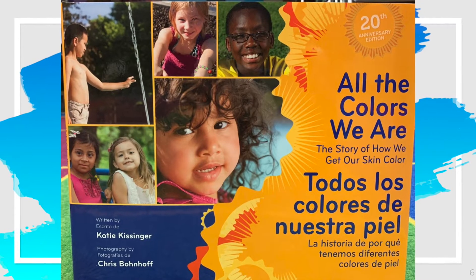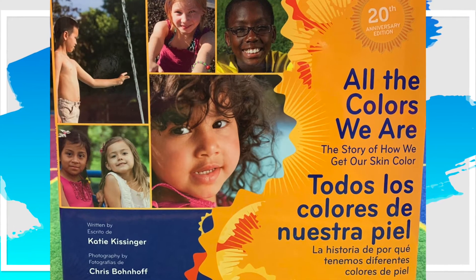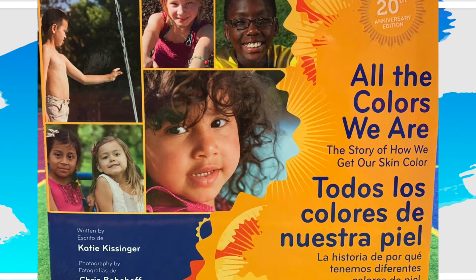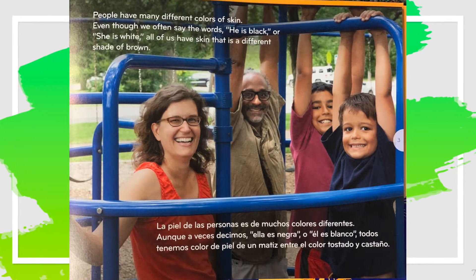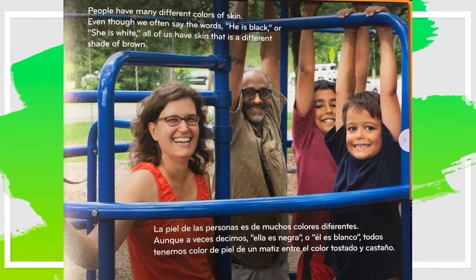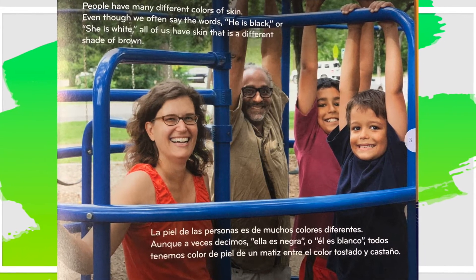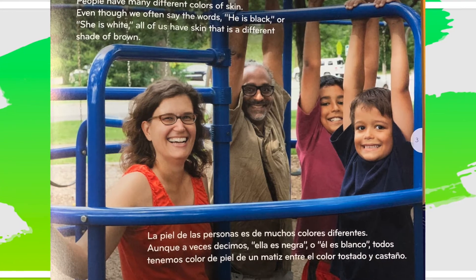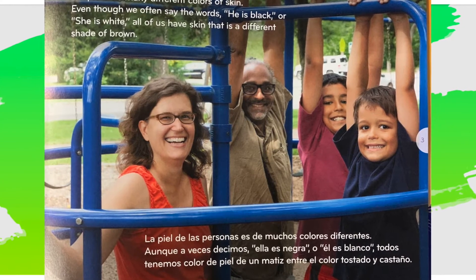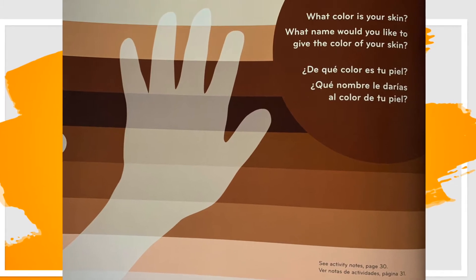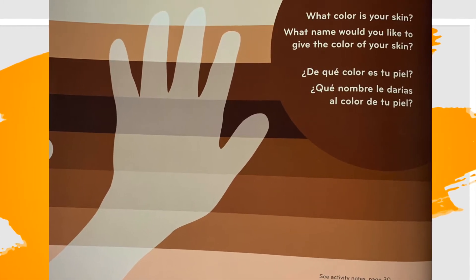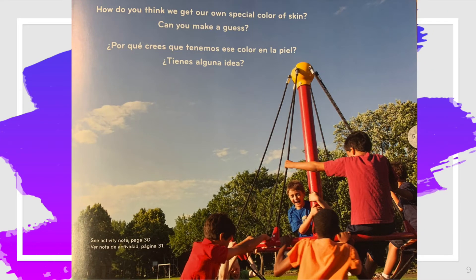Let's begin by reading the book, "All the Colors We Are," the story of how we get our skin color. People have many different colors of skin. Even though we often say the words he is black or she is white, all of us have skin that is a different shade of brown. What color is your skin? What name would you like to give the color of your skin? How do you think we get our own special color of skin? Can you make a guess?